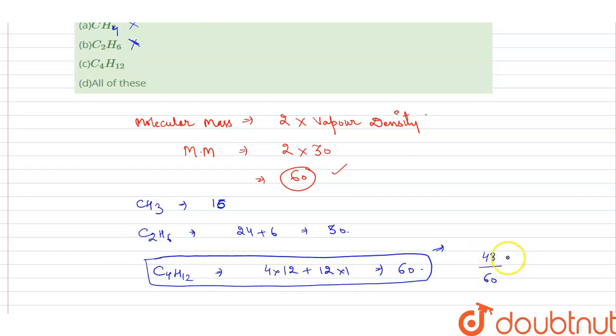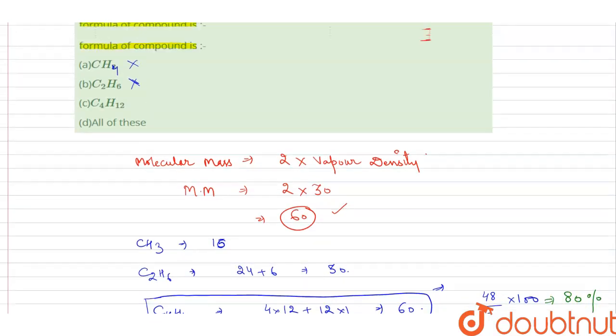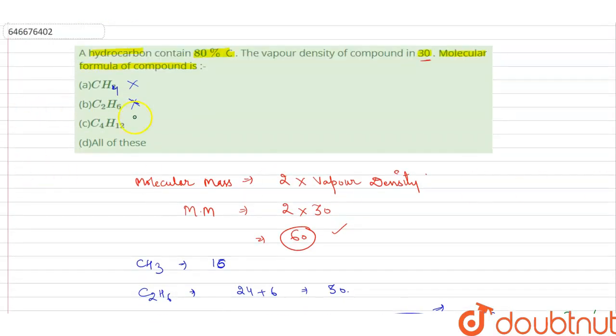...equals 80%. So in the given options, option C, that is C4H12, is the hydrocarbon which has 80% carbon and vapor density 30.